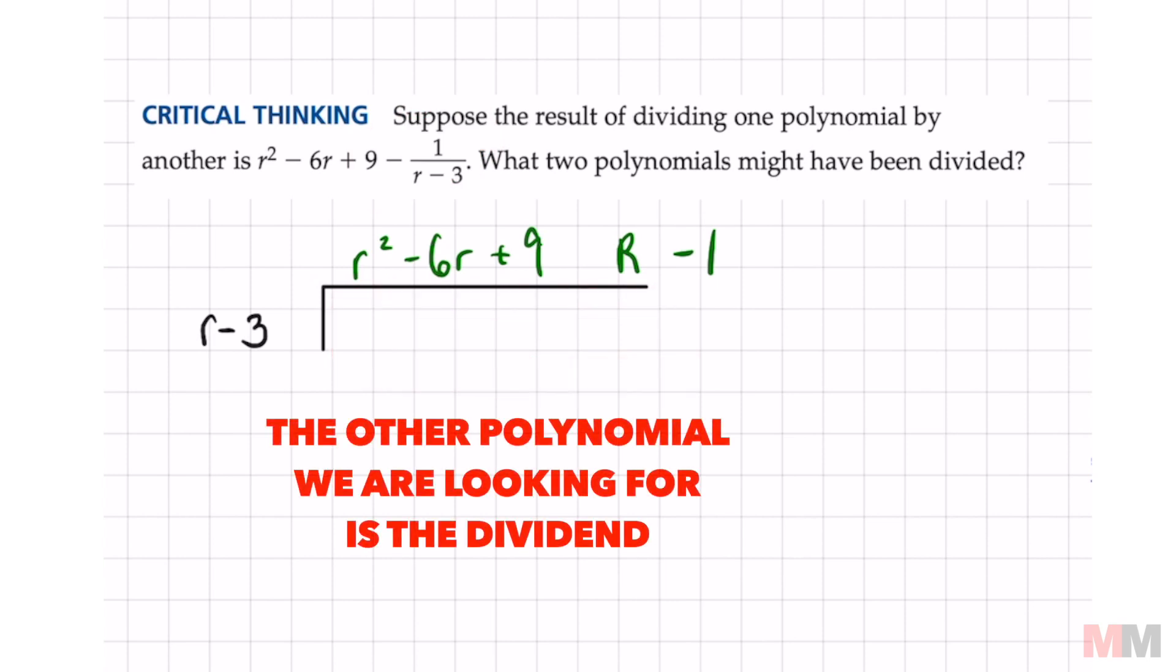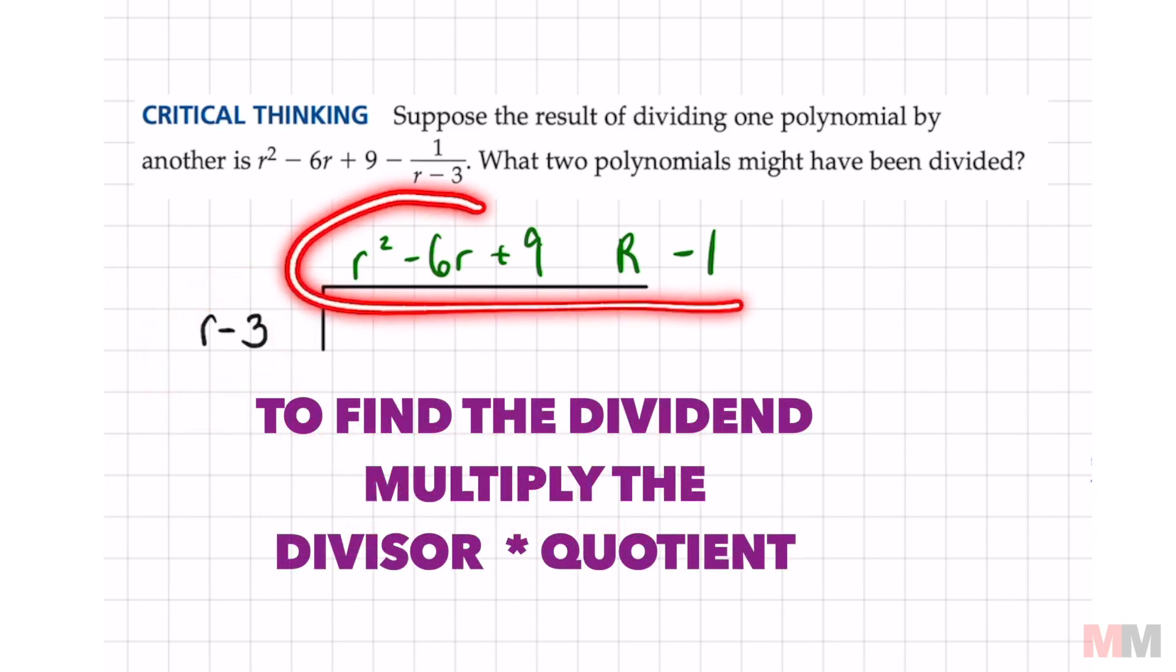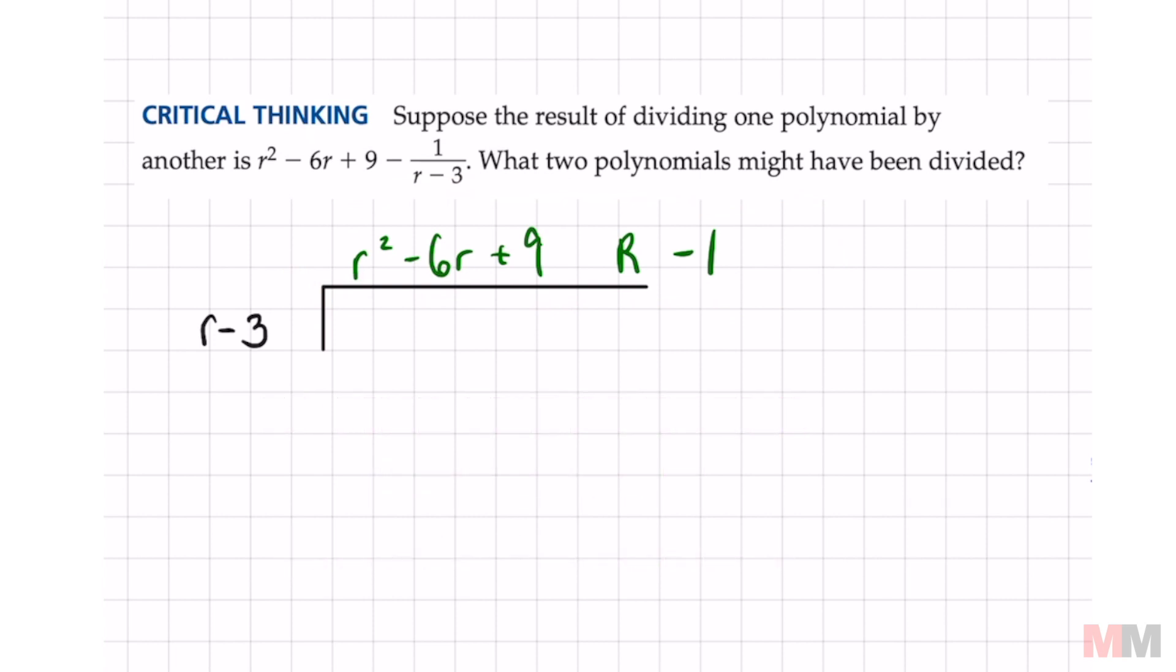And to find that, all we have to do is multiply our divisor with our quotient, and we will get the other polynomial that was divided. So let's go ahead and set that up.